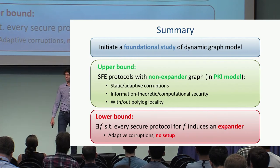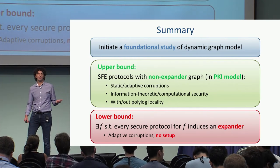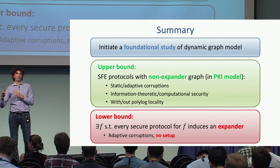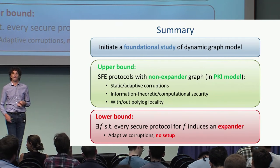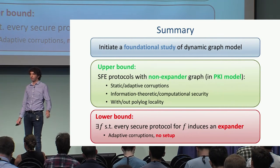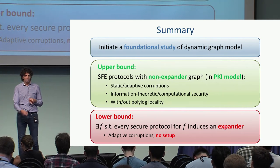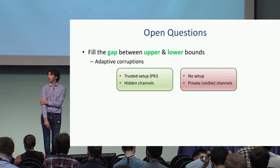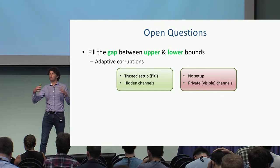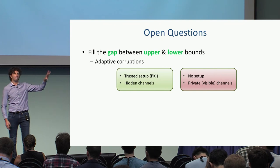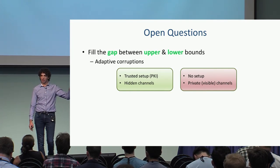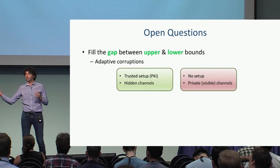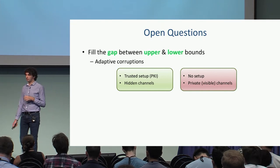To summarize: we initiate a foundational study of the dynamic graph model. We show an upper bound — a protocol that in a very strong sense is not an expander — and a setting where every protocol realizing some function must induce an expander. There is a gap between the upper and lower bounds that we need to close. In the upper bounds, we have trusted setup and hidden communication channels for adaptive corruptions, whereas in the lower bounds, we have no setup and visible yet private channels.